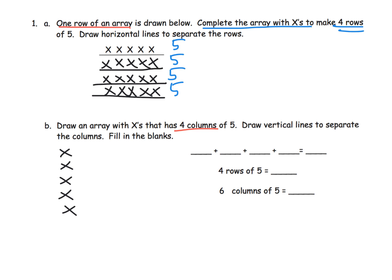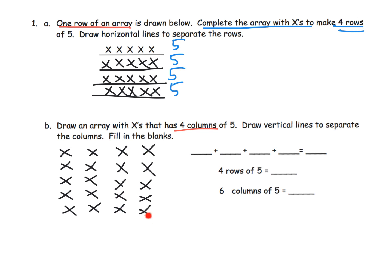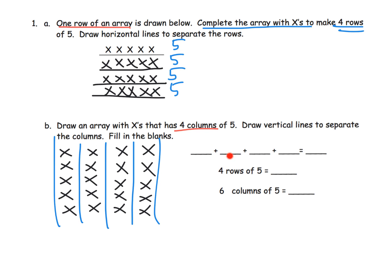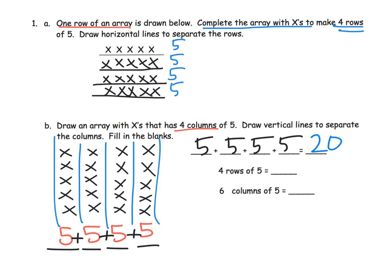There's one column — one, two, three, four, five — there's another column, then one, two, three, four, five — there's another column, and our last column — one, two, three, four, five. We have four columns of five, and there are indeed five X's in each column. We draw vertical lines to separate the columns. Each space represents a column: five in this column, five in this column, five in this column, five in this column — and that gives us our repeated addition: five plus five plus five plus five.